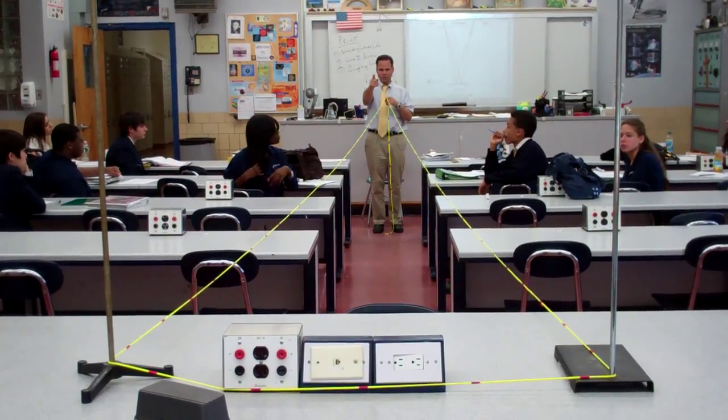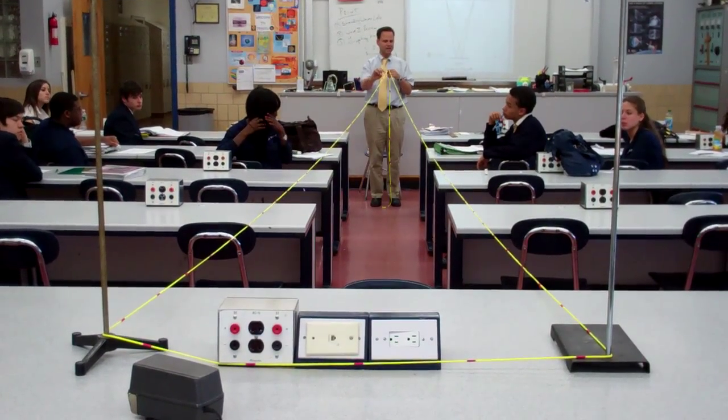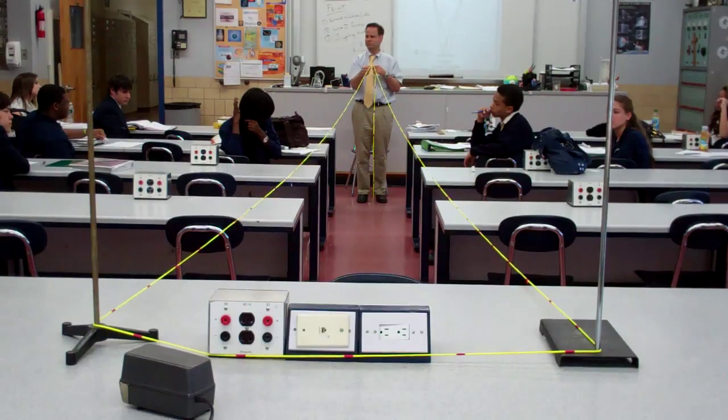The yellow strings are going to represent waves from two slits. And the red markings, Caleb will be what? We'll say the crest. It could be the trough, but we'll see if it's the crest.